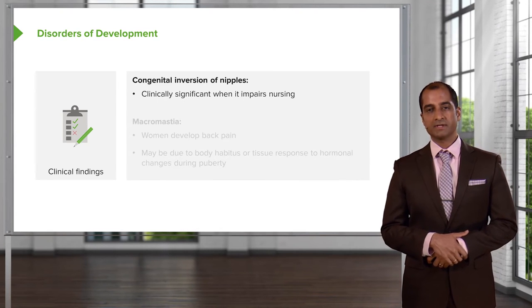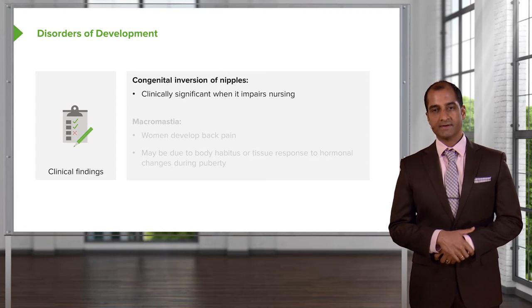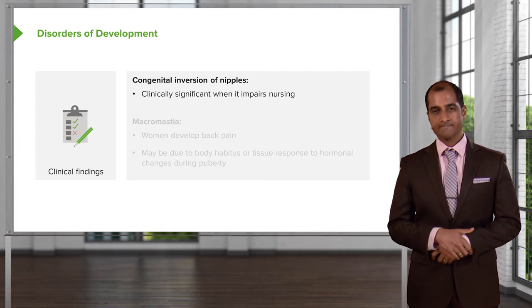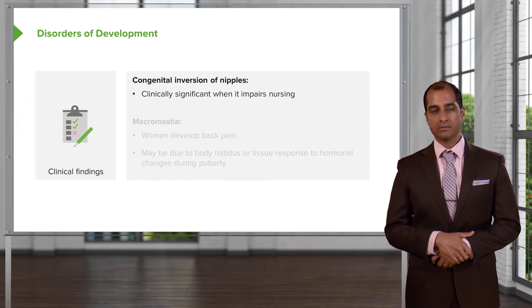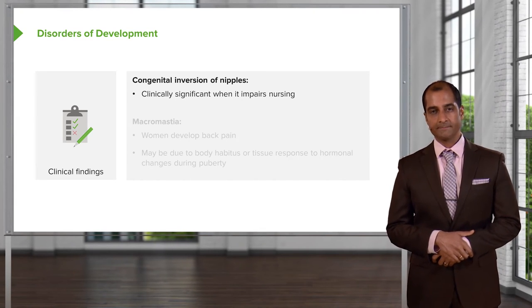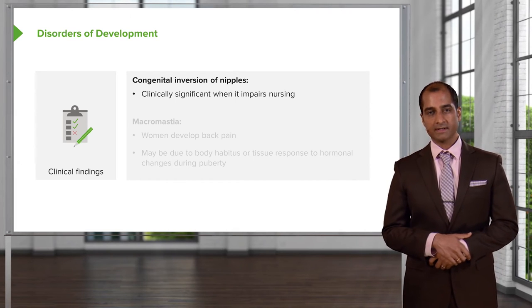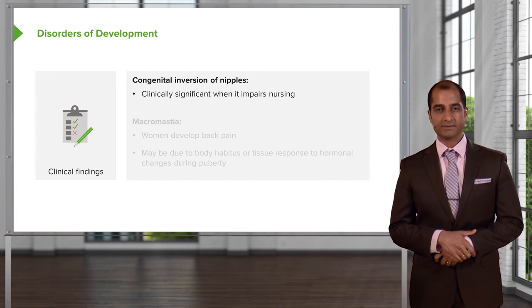Congenital inversion of nipples is clinically significant when it impairs nursing — that's where it becomes really important. For example, a newborn is about to suckle and the nipples are inverted. That's where it becomes clinically significant, especially for the child as you can imagine.